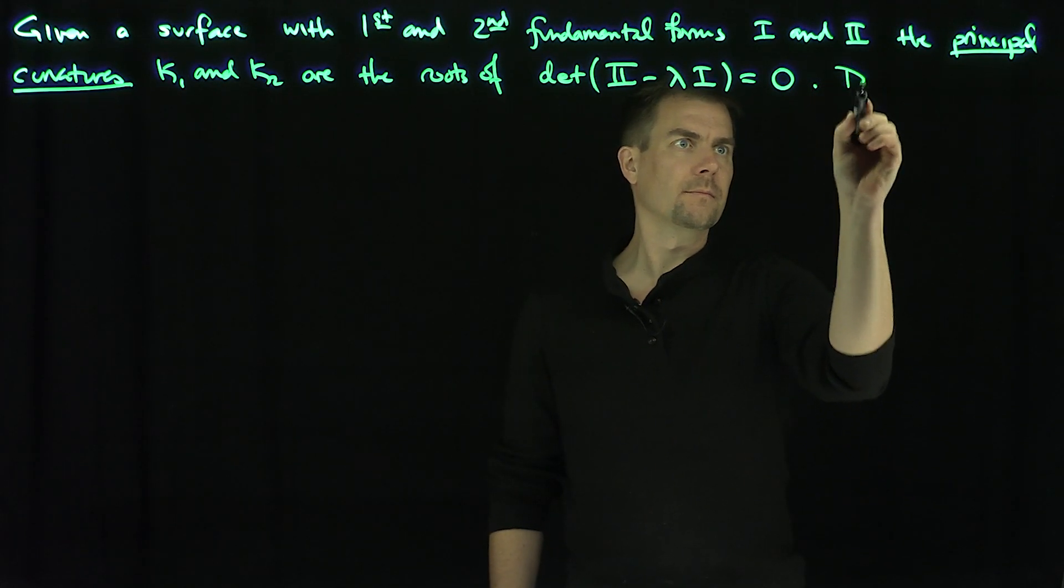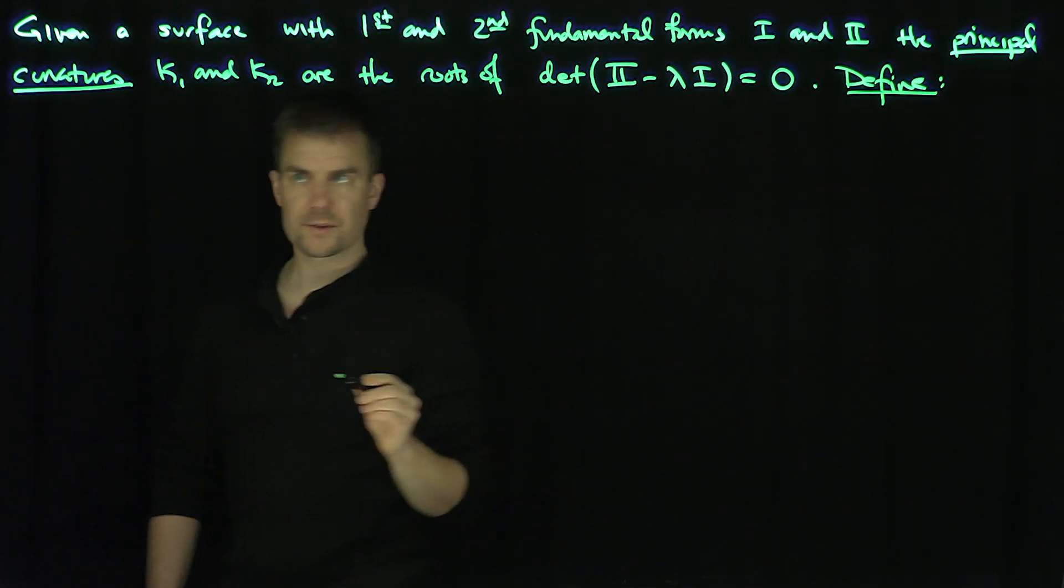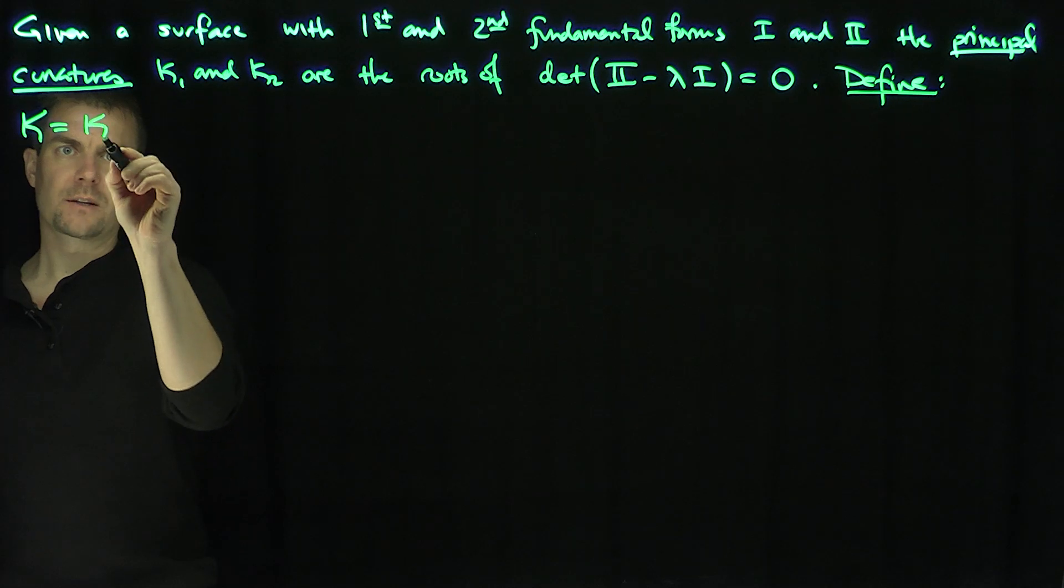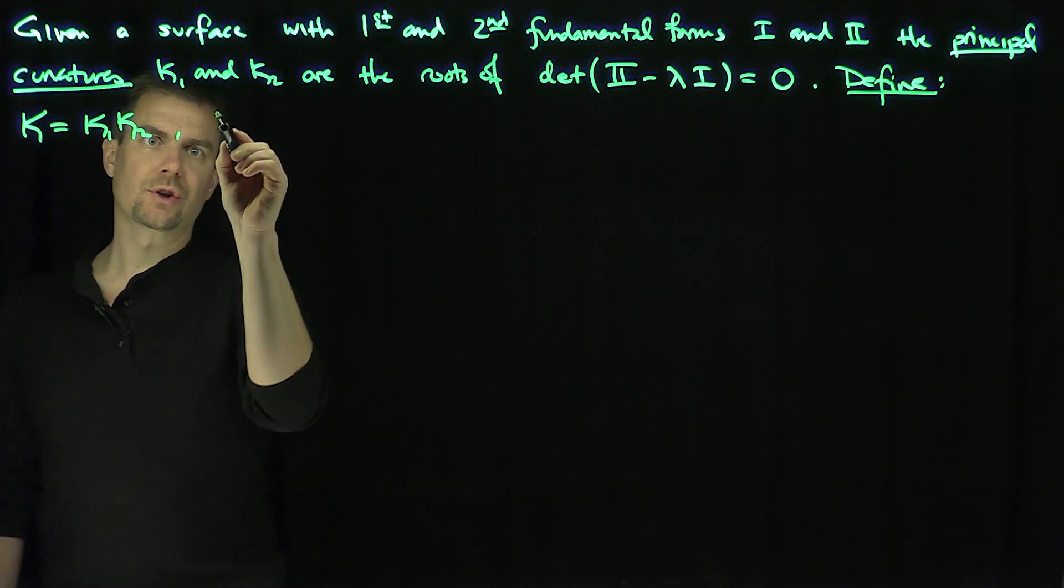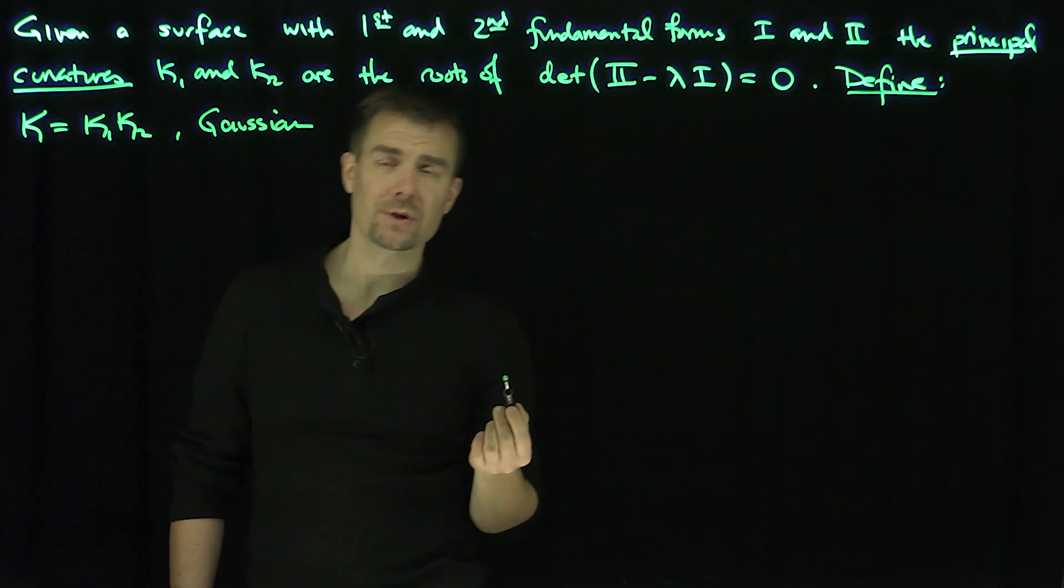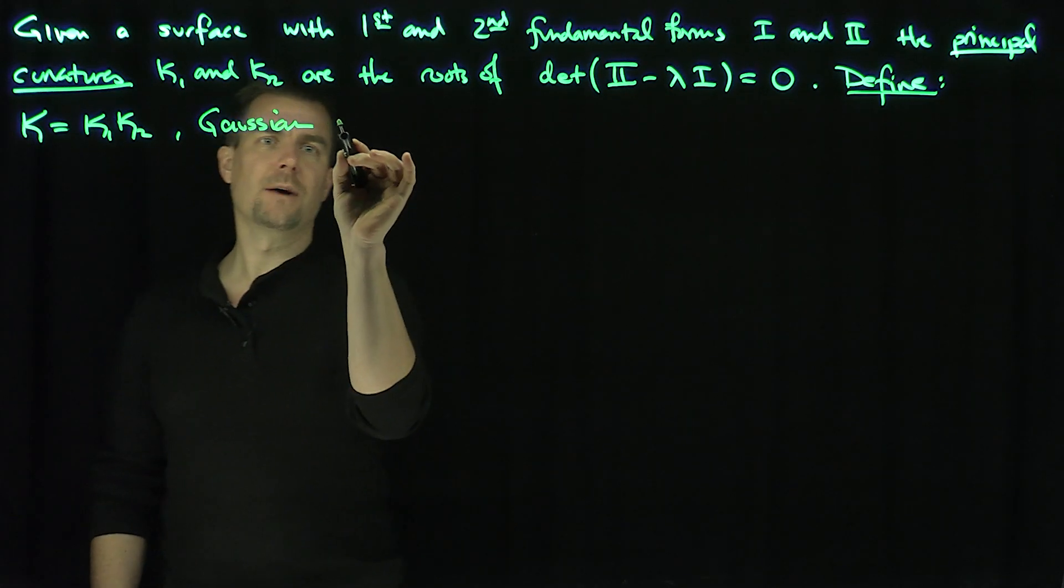We define two quantities. We define capital K, which is the product of the principal curvatures. And this is the Gaussian curvature of the surface. And we're going to relate Gaussian curvature to what we've seen tensorally for higher dimensional things. This is the Gaussian curvature.